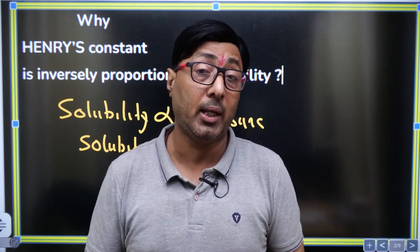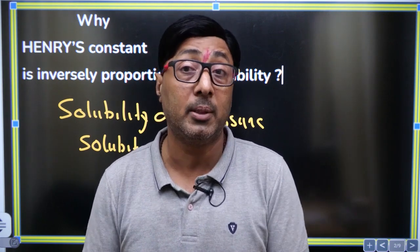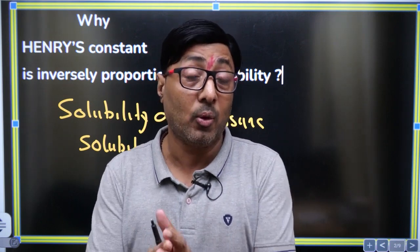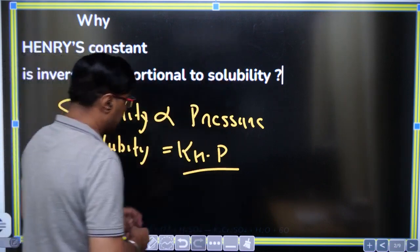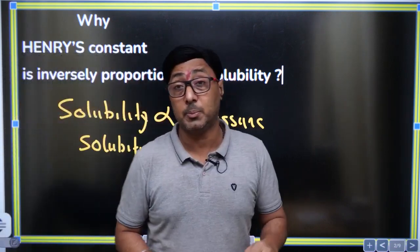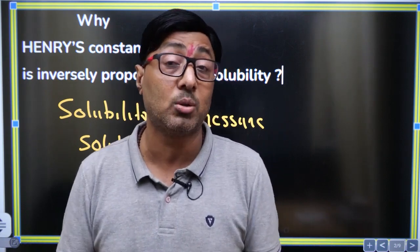If a gas is having higher value of KH, it is supposed to be less soluble. So from where has this problem come? What is the root of this problem? From where has this misconception been created? And the answer is, this may be one perception, but this is not the right expression. This is not the absolute expression of Henry's law.